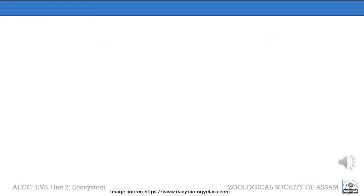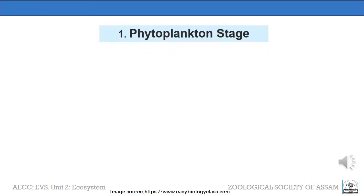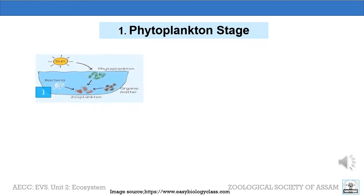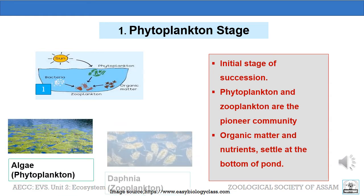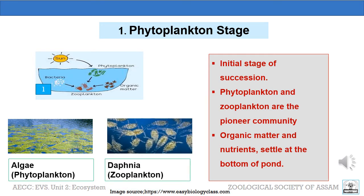Let us begin with the first stage: the phytoplankton stage. This is the initial stage of succession in a virgin ecosystem. Phytoplankton and zooplankton like algae, cyclops, and scledophora are the first to colonize, hence are called pioneer colonizers. These organisms add large amounts of organic matter and nutrients which settle at the bottom.